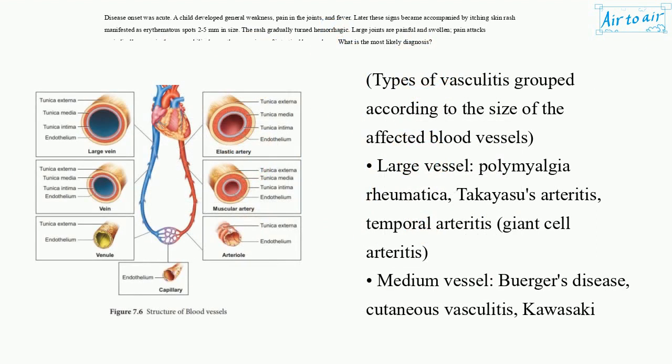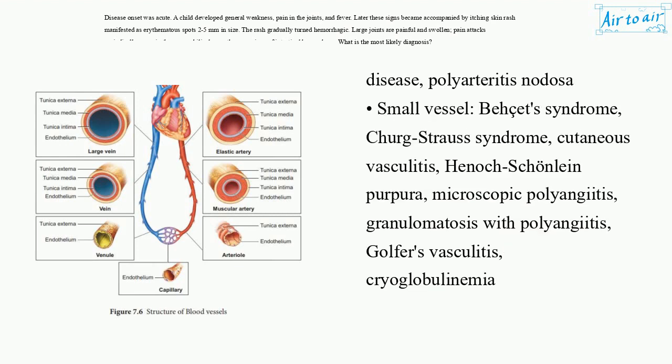Types of vasculitis are grouped according to the size of the affected blood vessels. Large vessel: polymyalgia rheumatica, Takayasu's arteritis, temporal arteritis, giant cell arteritis. Medium vessel: Berger's disease, cutaneous vasculitis, Kawasaki disease, polyarteritis nodosa.